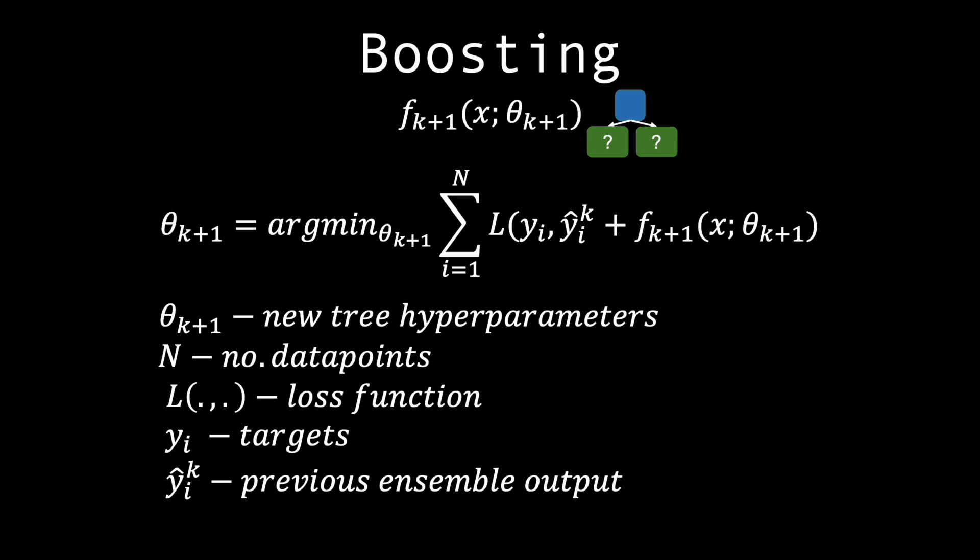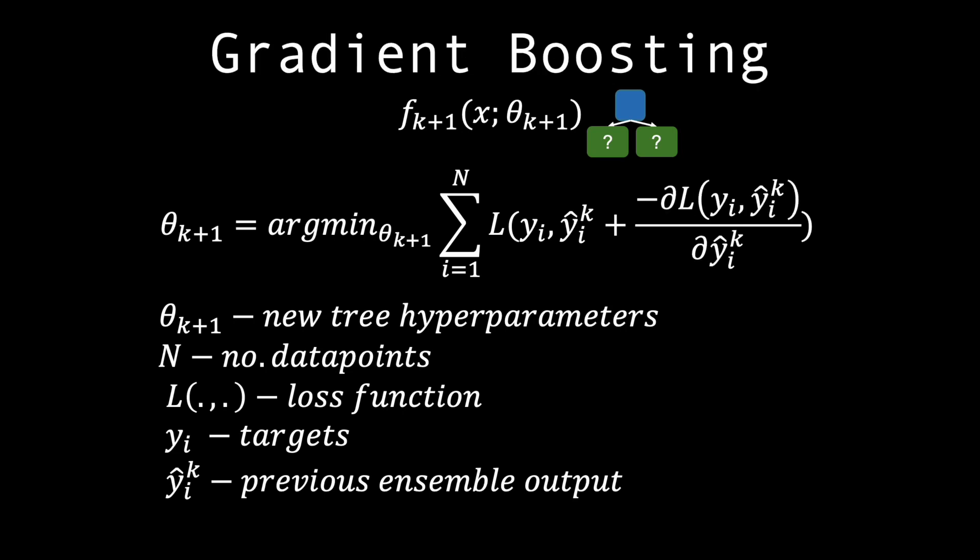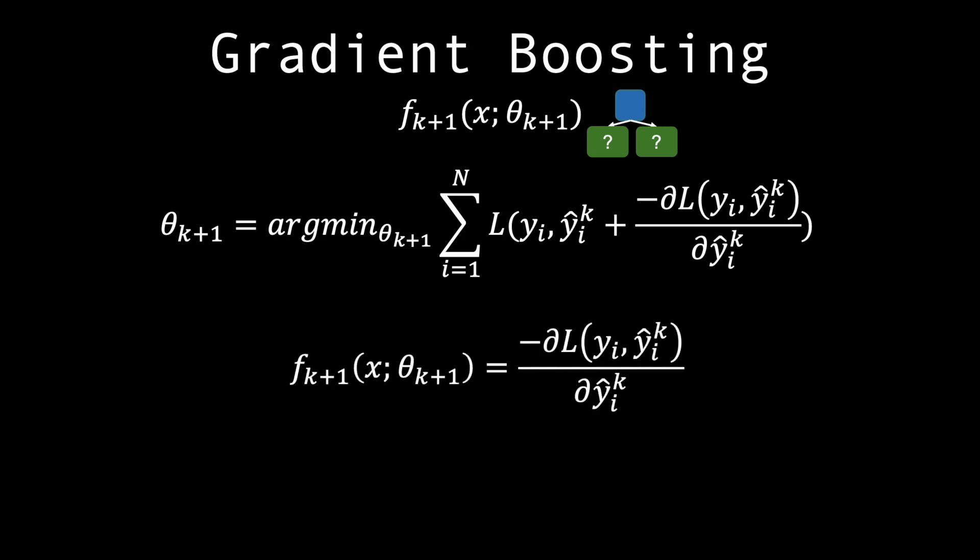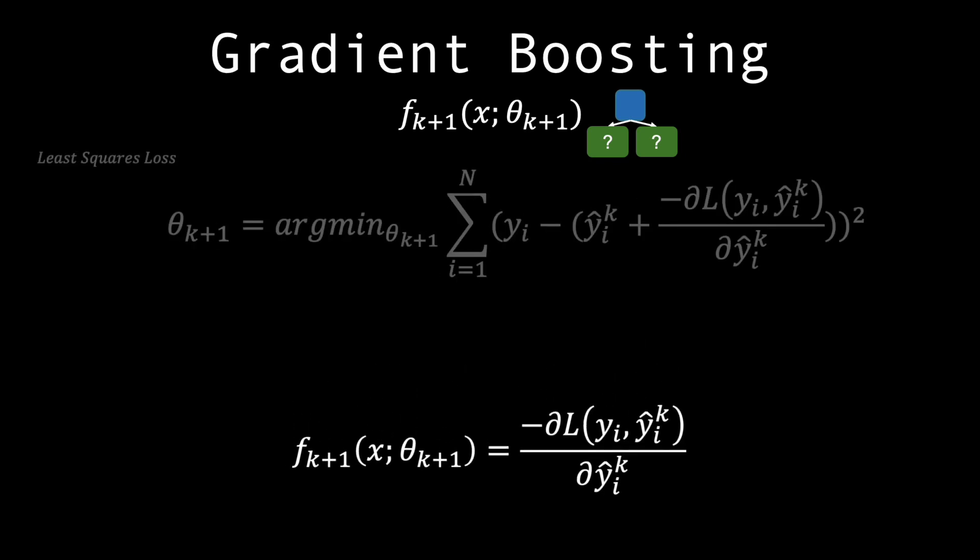Gradient boosting furthers this, by considering the new tree as a gradient descent step, and sets the negative gradient of the loss as an approximate residual, and thus we are optimizing the new tree on these gradients.